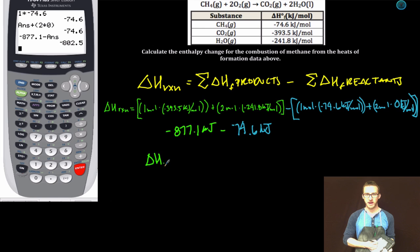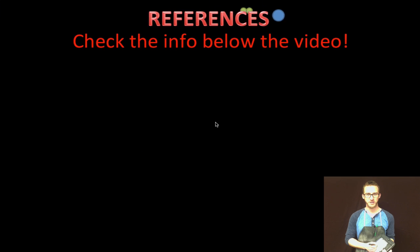Delta H of reaction calculated from the heats of formation. Negative 802.5 kilojoules per mole of reaction. That does it for this vid. Have a fantastic day.